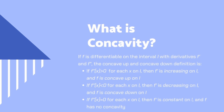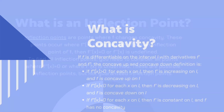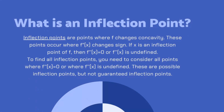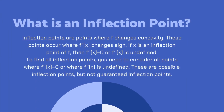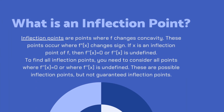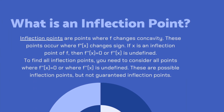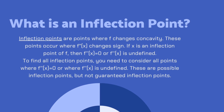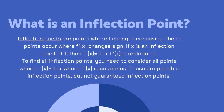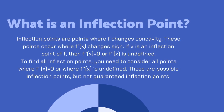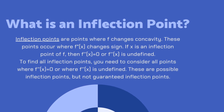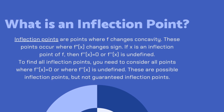There is also one more important thing, which is called the inflection point. The inflection point is a point where the function changes its concavity, when the second derivative is equal to zero.